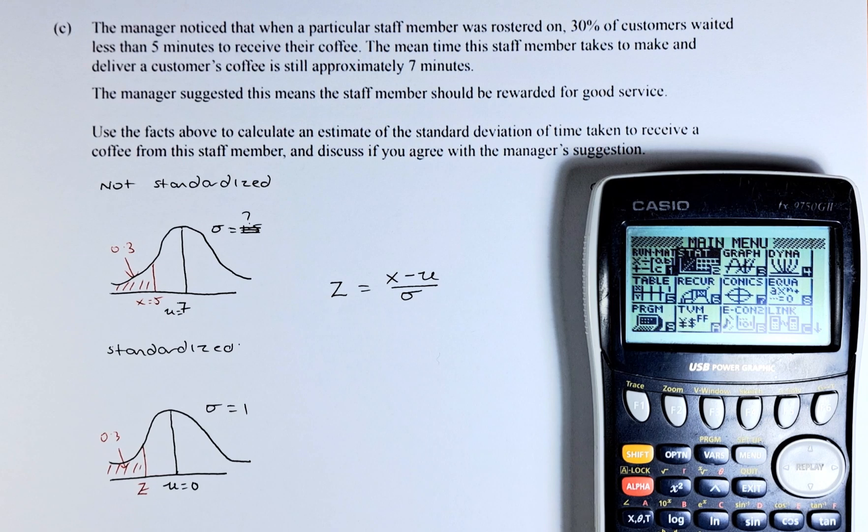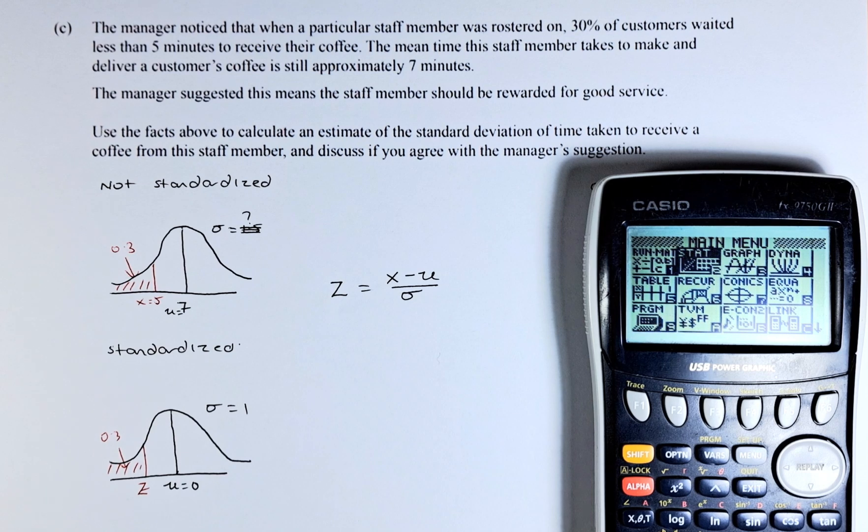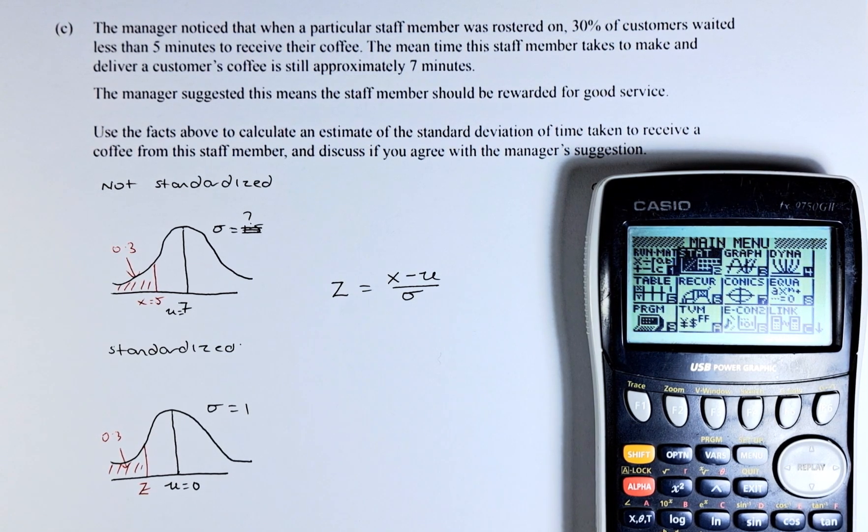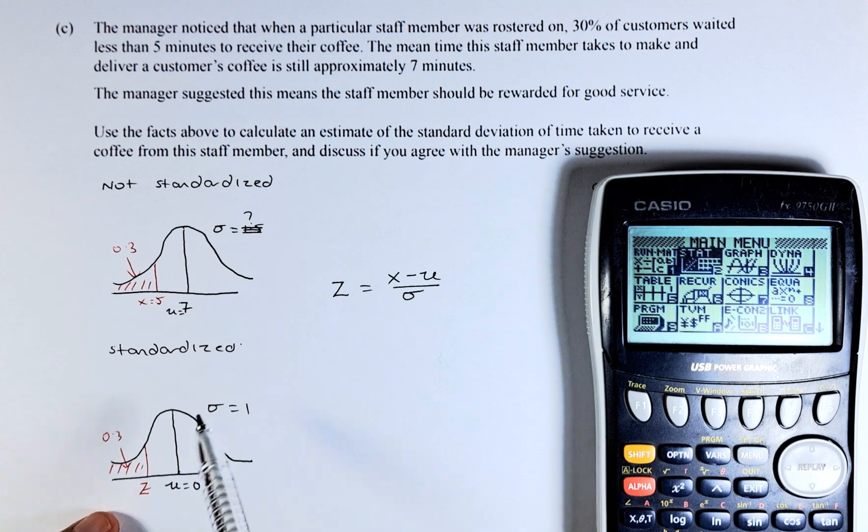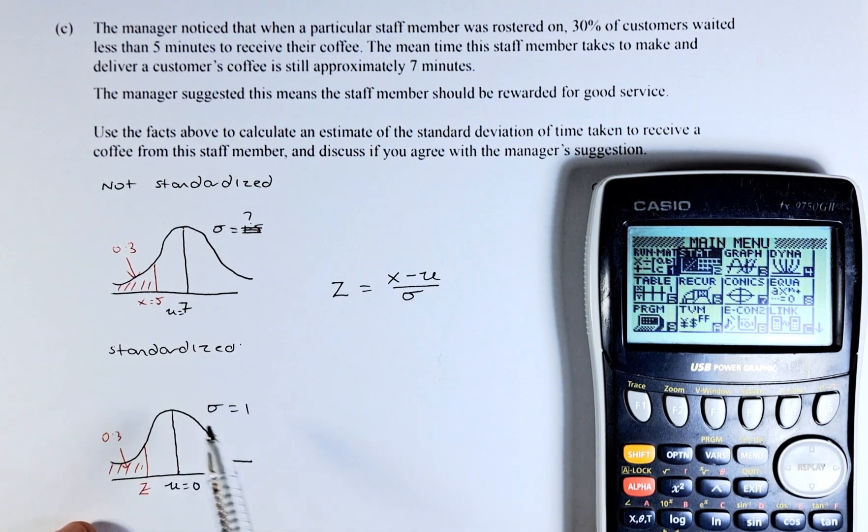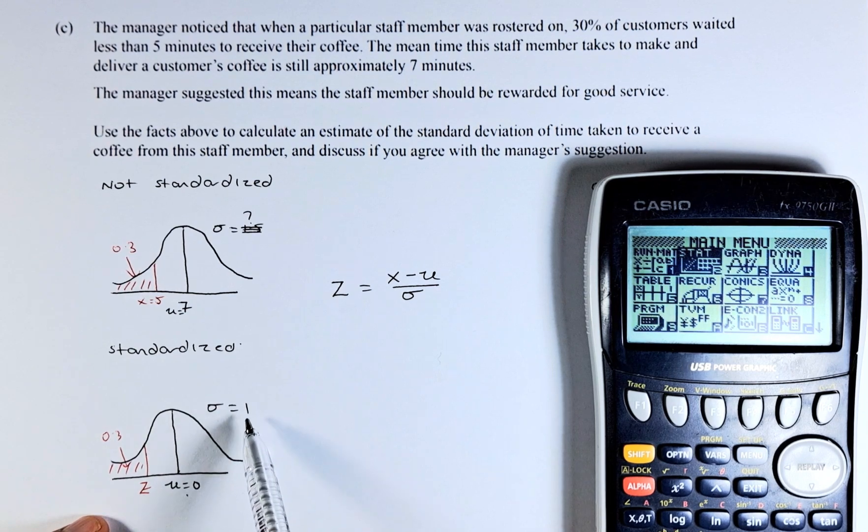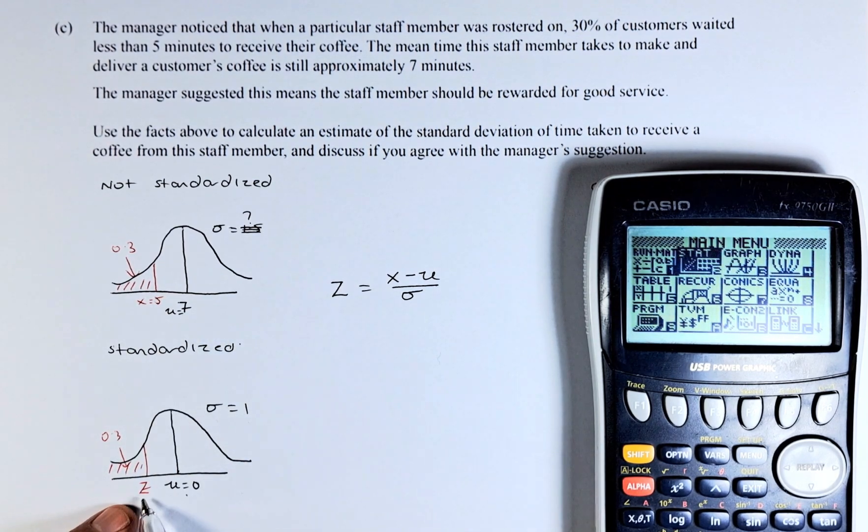So this is an inverse normal distribution. When you have an inverse normal, whenever they ask to find mean or standard deviation, you have to standardize the data in your calculator. So we are going to put this data here. The mean is 0 and the standard deviation becomes 1 before we can calculate the Z which is the value here.